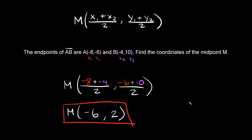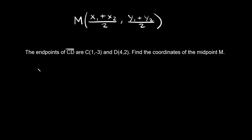Alright, not too bad right? Let's try a couple more. Here's the next one. The endpoints of segment CD are: C is at 1, comma negative 3 and D is at 4, comma 2. Find the coordinates of the midpoint M. So let's add up the x's.